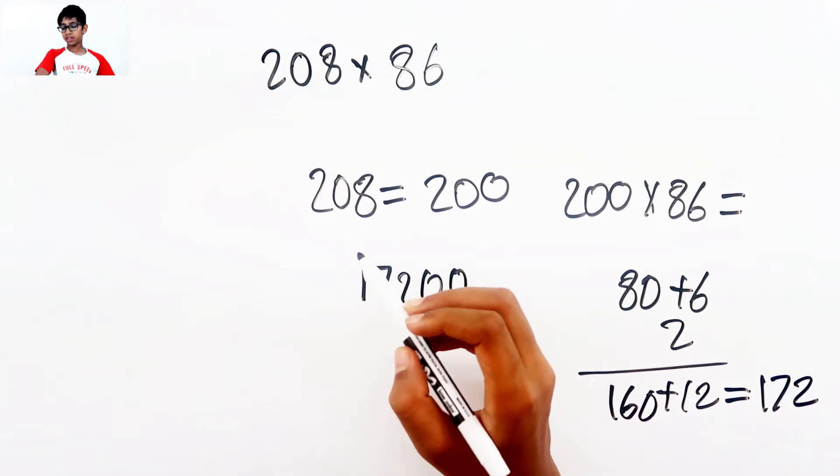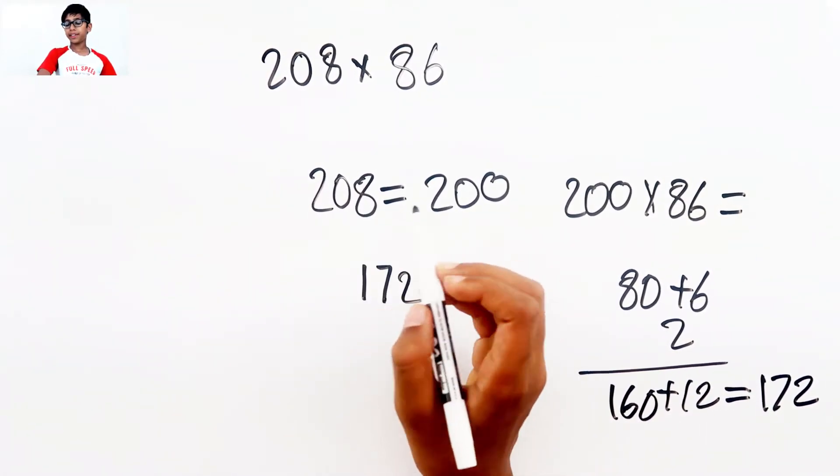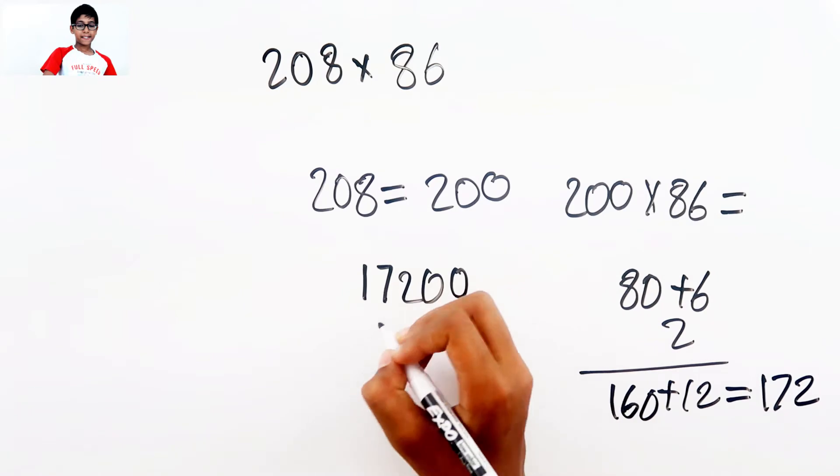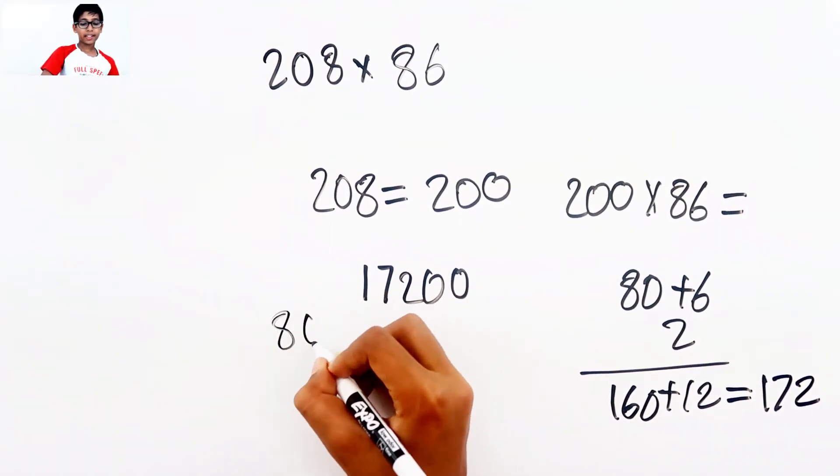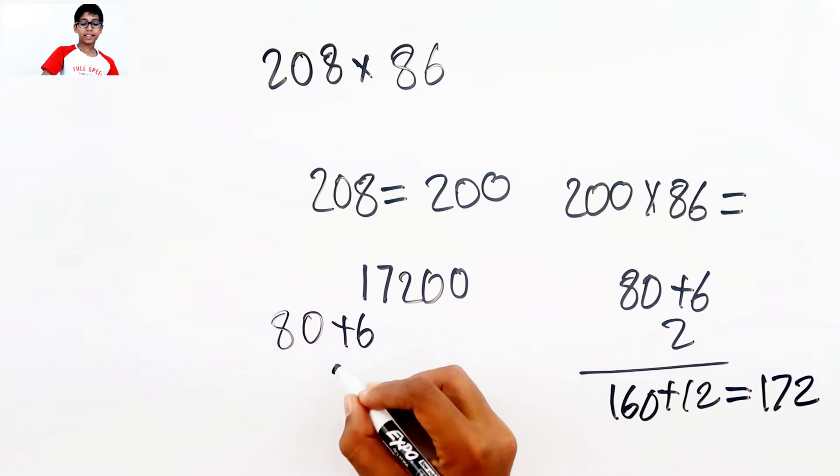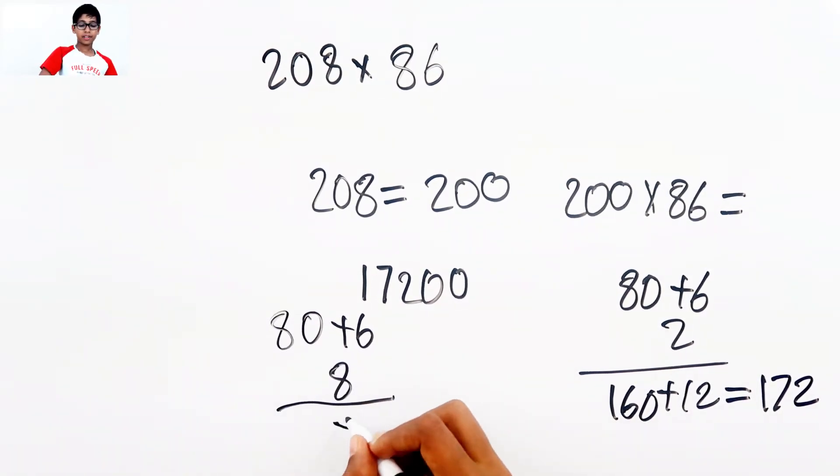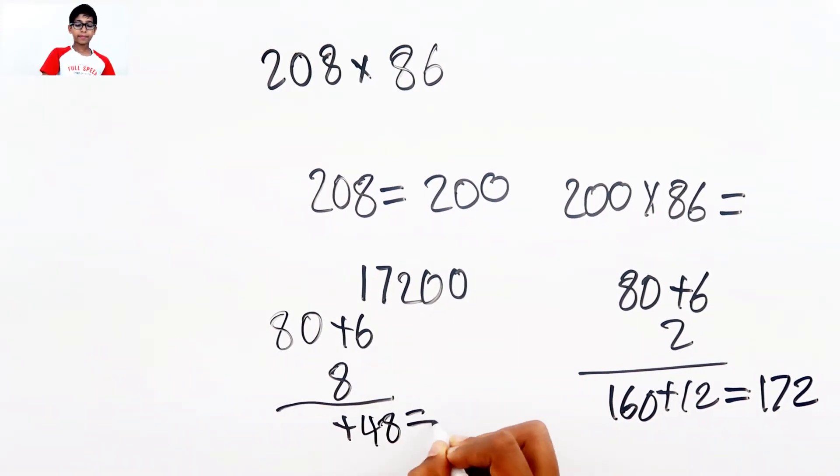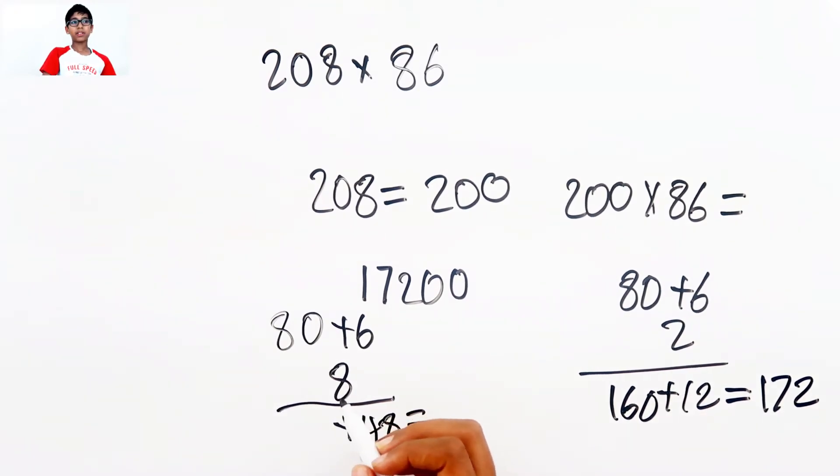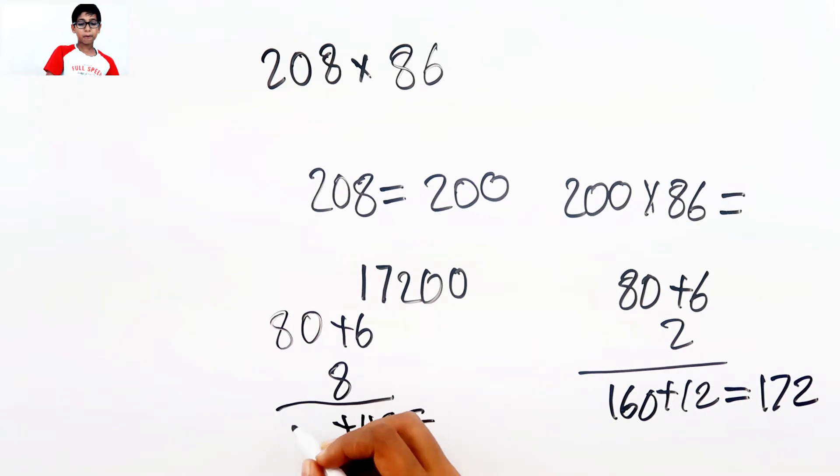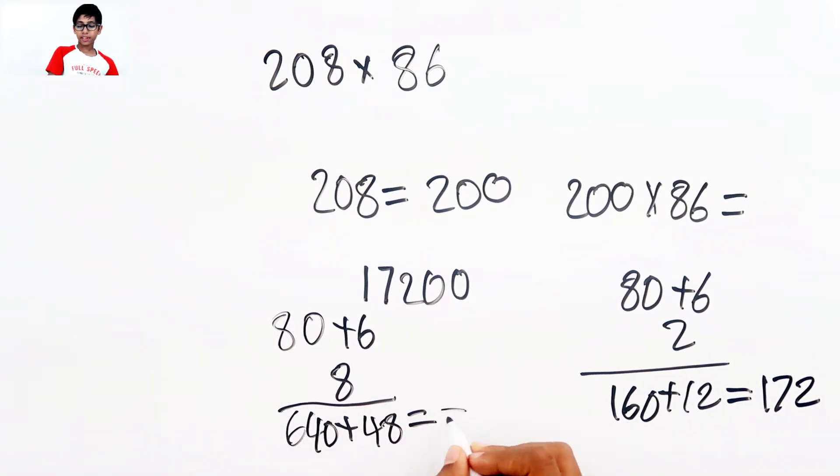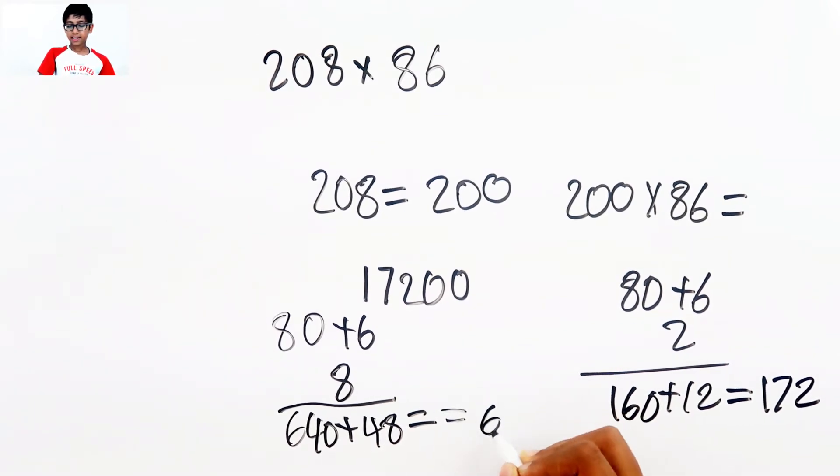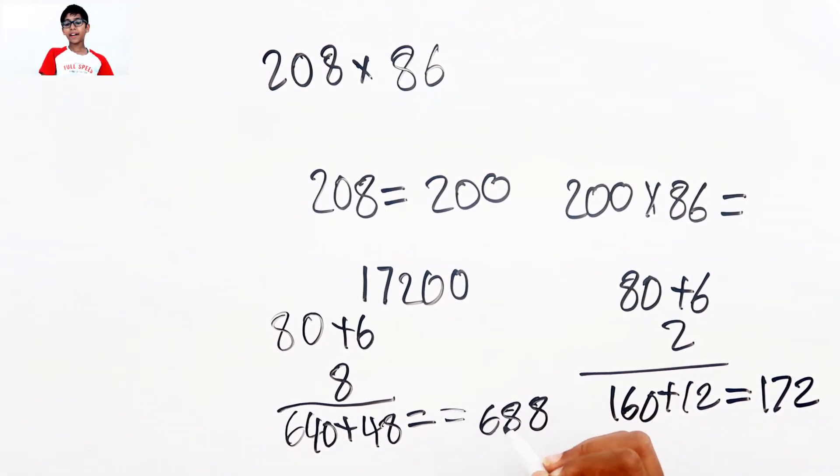So 17,200. Now we need to do 8 times 86. So 80 plus 6 and then 8 down here. We need to put plus down there. 6 times 8 equals 48, and then 8 times 8 equals 64. So 640 and 688.